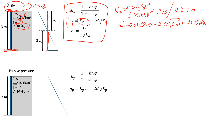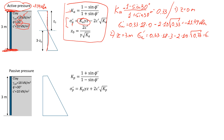Now let's estimate the active stress at the bottom at three meters, so z equals 3 meters. Using the same formula, the active pressure will be 0.33 times unit weight 18 times 3 meters, minus 2 times cohesion of 10, times the square root of 0.33. According to my calculations, that gives a value of 6.33 kPa.